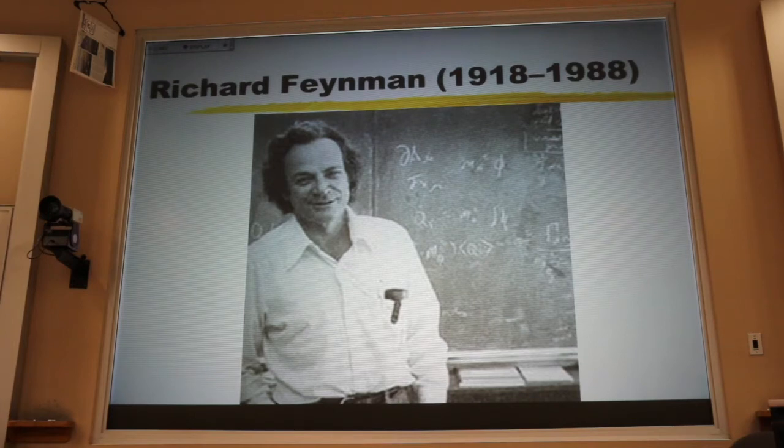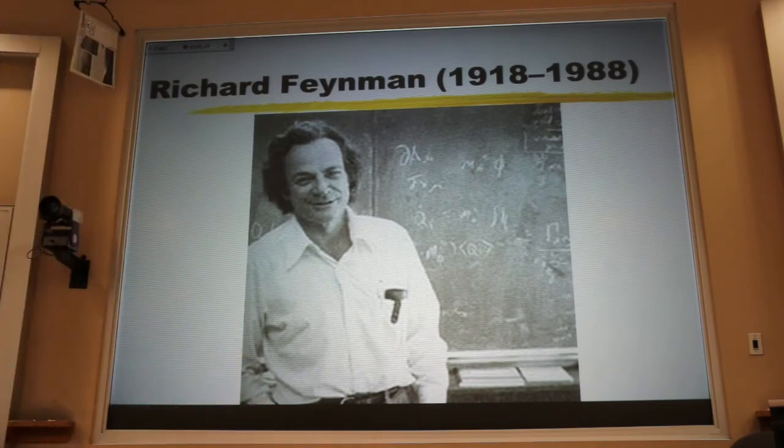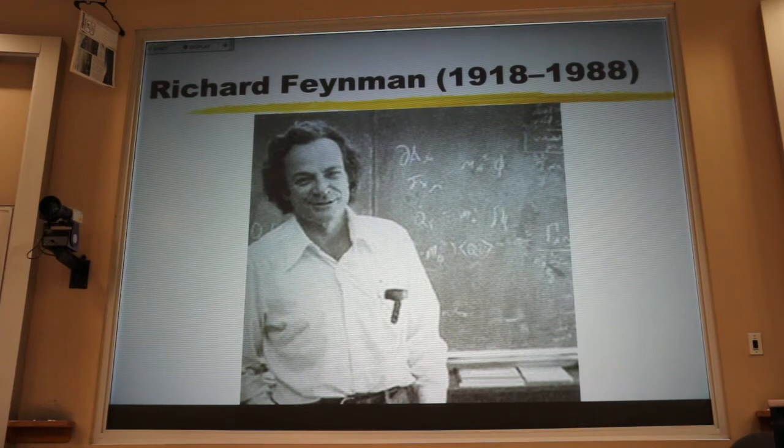And he was trying to teach those freshmen about energy. And he told them a story about a young boy, a little bit spoiled. His name was Dennis the Menace. And his mother was a little bit controlling. Now, Dennis had 28 identical blocks. And every day his mother would come in and count those blocks to make sure they were always there. And every day she'd be happy when she saw all 28.